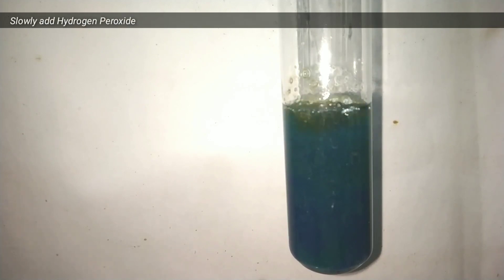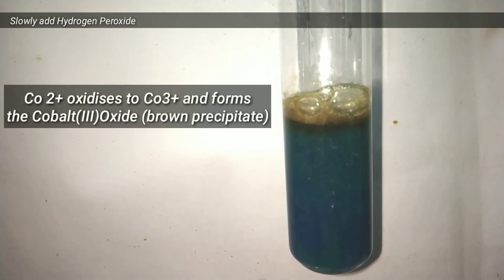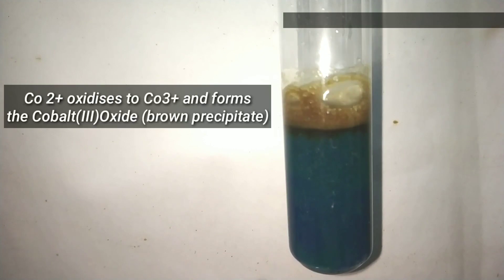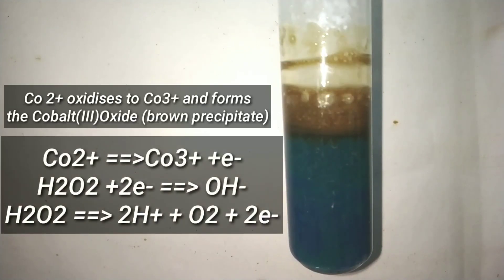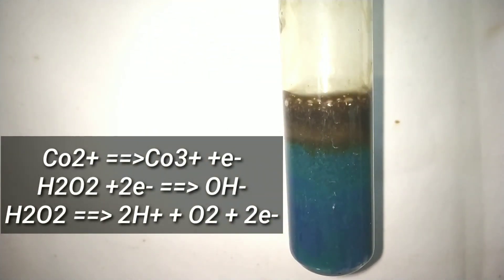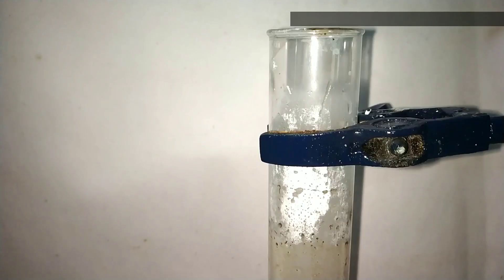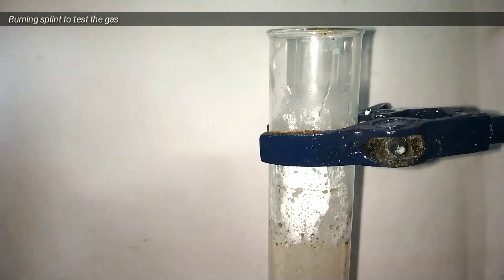Now I slowly added some hydrogen peroxide into the same test tube. You can immediately see the formation of a brown colored precipitate and a gas is evolved. The precipitate is cobalt 3 oxide as hydrogen peroxide oxidizes the cobalt 2 plus into cobalt 3 plus.